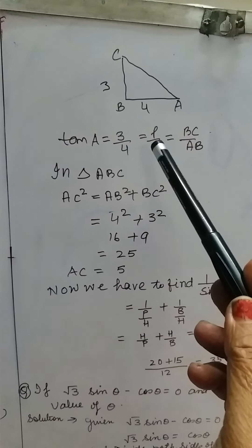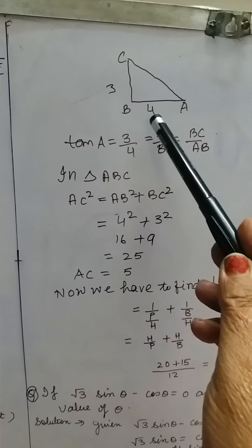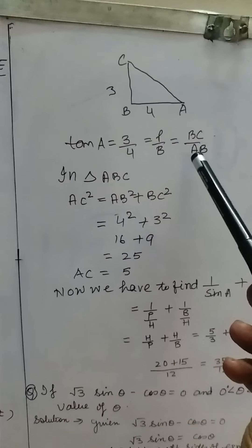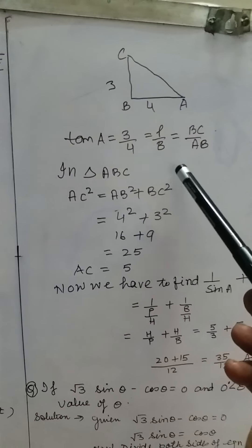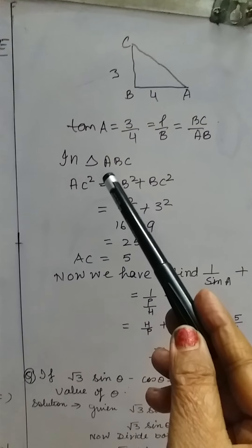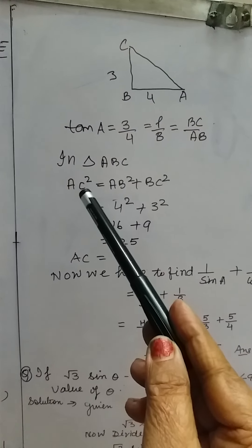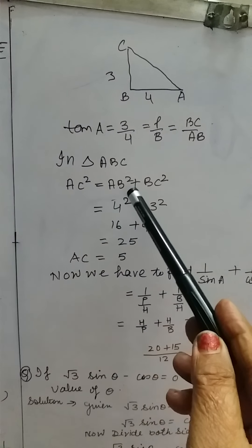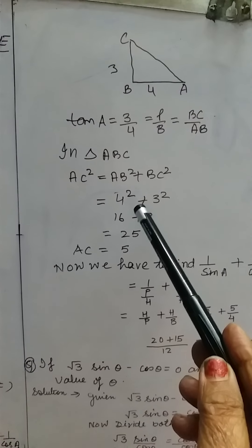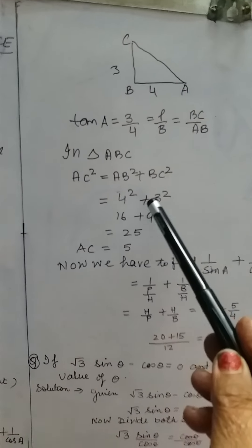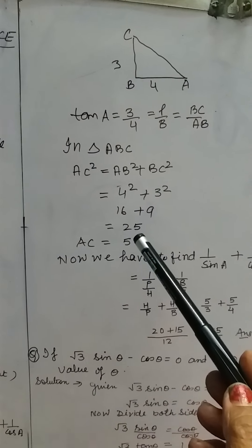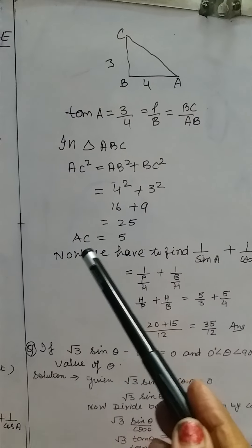Since we consider angle A, AB is the base and BC is the perpendicular, so p by b equals BC by AB. In triangle ABC, by Pythagoras theorem, AC squared equals AB squared plus BC squared, which is 4 squared plus 3 squared, giving 16 plus 9 equal to 25. Therefore AC equals 5.